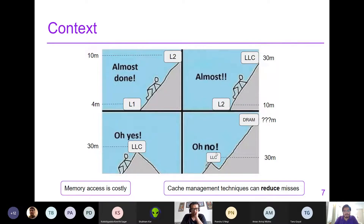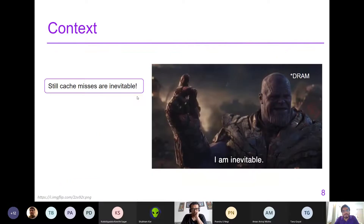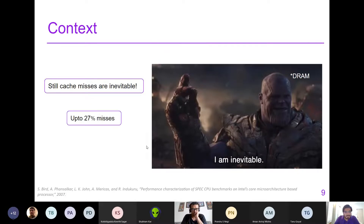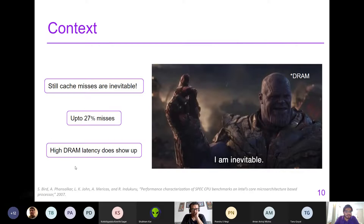Cache management techniques can reduce the number of misses by prefetching data into these cache hierarchies. However, cache misses are still inevitable. In typical benchmarks like SPEC CPU, the highest number of LLC misses can go as high as 27%. These are latency-avoiding techniques, but at the end of the day we are not able to fully reduce misses down to zero.